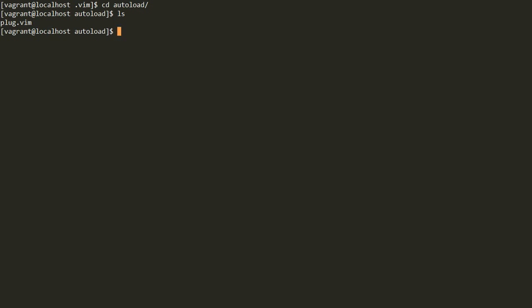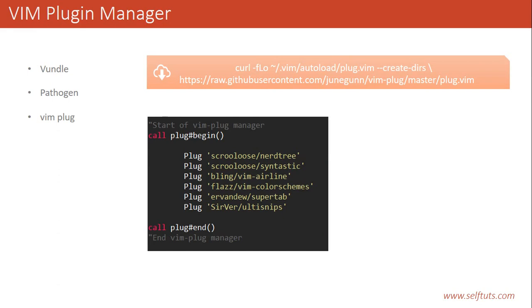vim-plug has been successfully installed. Now to activate our plugin manager, we have to write a specific syntax in our .vimrc file. Any configuration for Vim is done inside the .vimrc file which is present in our home directory. When we run Vim, it reads the .vimrc file and sees all the configuration. To activate a plugin, we have to use the syntax: call plug#begin and call plug#end.